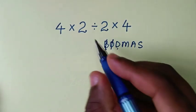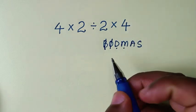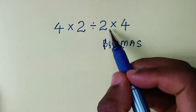D is for division - we have division here, 2 divided by 2. M is for multiplication - we have multiplication here, 4 times 2 and 2 times 4.